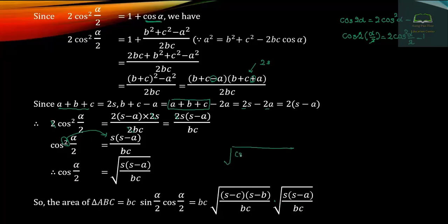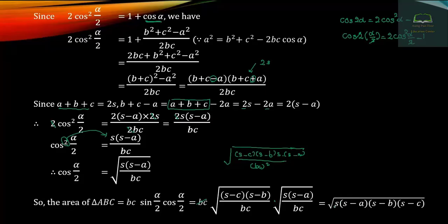Area of ABC equals bc into sin(A/2) into cos(A/2): square root of (s minus c)(s minus b) over bc times square root of s(s minus a) over bc. So bc cancels and the area of triangle equals square root of s(s minus a)(s minus b)(s minus c).